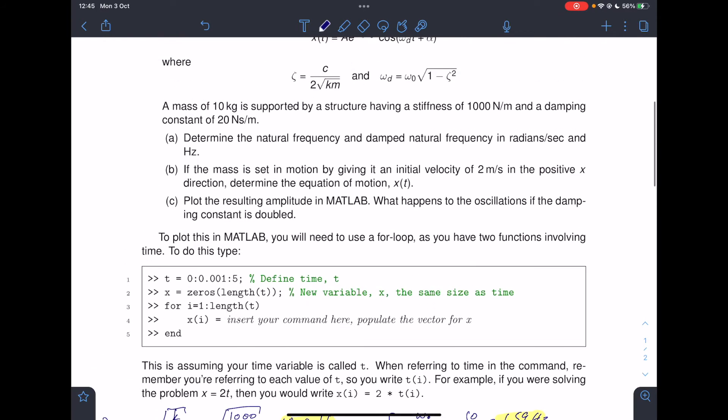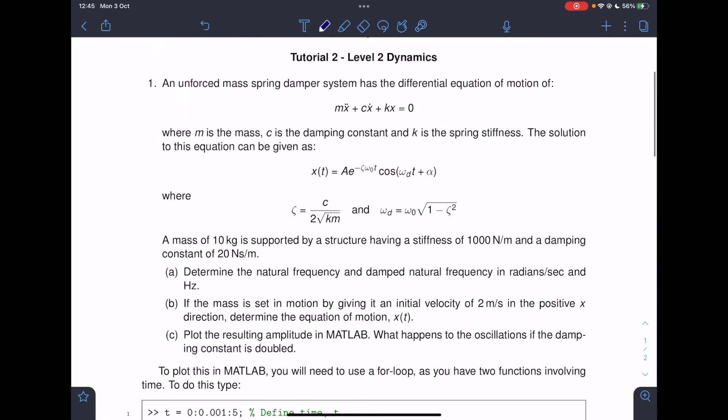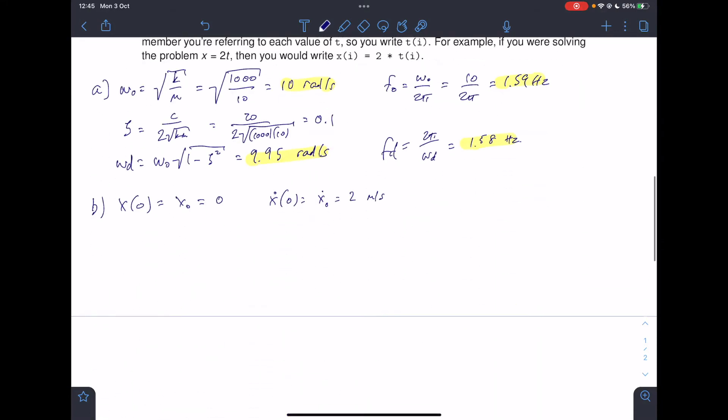We basically need to find this equation for the system. There's two things in that equation that we don't know: A and alpha. Those are arbitrary constants when you derive the equation, and they are determined from the initial conditions. So let's apply the initial conditions. If I take my equation of motion x(t), I'm going to rewrite what I've got up there so we can refer to it.